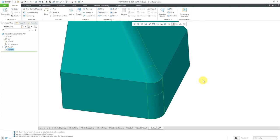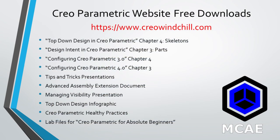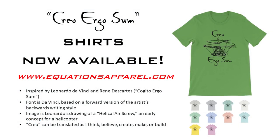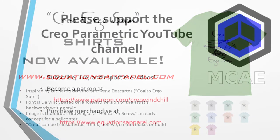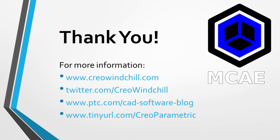There are lots of options available when you are doing your different transitions. To recap, the different types include: Intersect, Corner Sphere, Patch, Round Only 1, Round Only 2, Blend, Continue, Stop Case 1, Stop Case 2, Stop Case 3, Stop at Reference, and Intersect at Surface. Usually when you start off, you'll have the Default option where Creo Parametric chooses one for you. I hope you enjoyed this video. For more information, please visit www.creowindchill.com. If you learned something from this video, please give it a thumbs up, and click Subscribe to be informed when new videos are uploaded. Thank you very much.